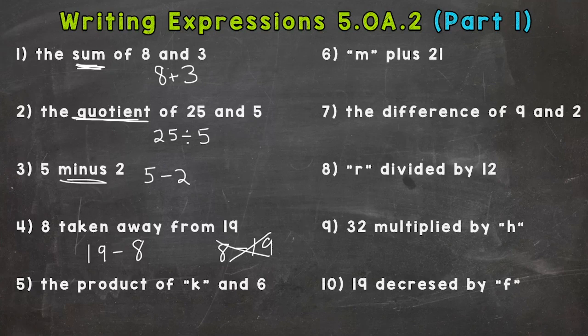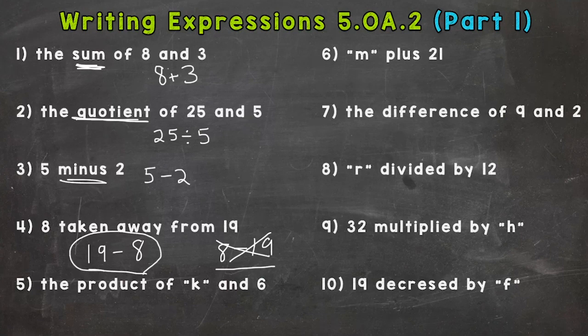Order matters when it comes to subtraction and division. So 19 - 8 would equal 11. 8 - 19 equals negative 11. Did that give you the same thing? No, obviously not. So you need to think about what is being asked. That's one you definitely need to double check and read back to yourself to see if you have it.